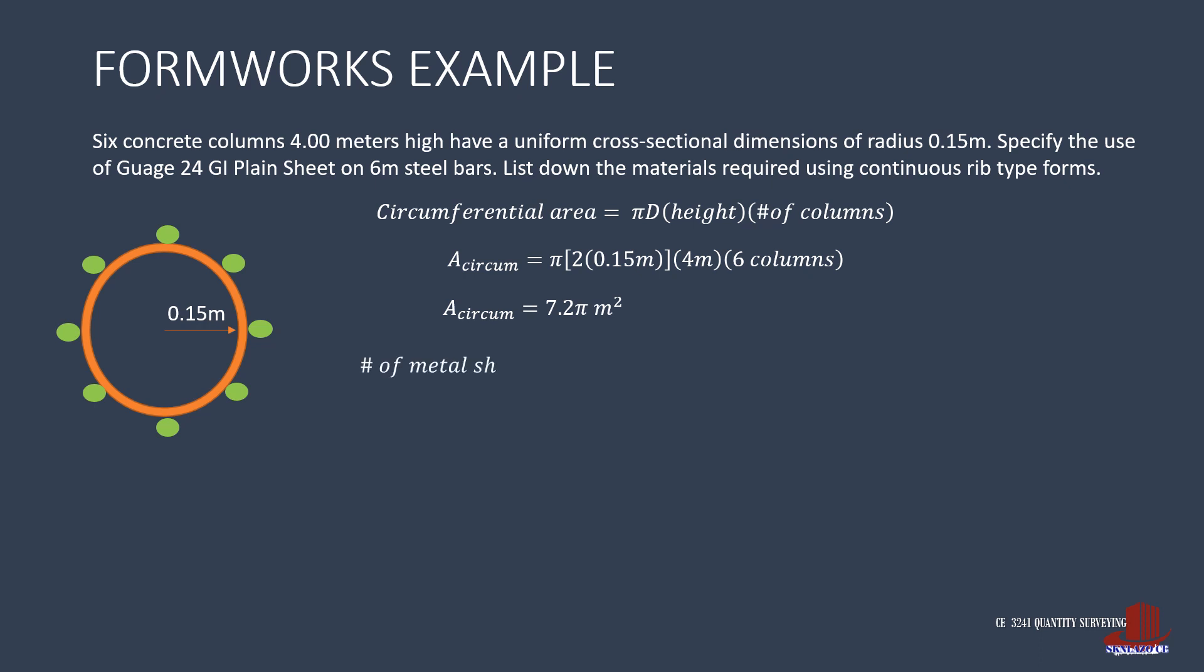So the number of metal sheets is the area of 7.2π divided by area of 1 metal sheet, and that is 1.2 by 2.4. So we get 7.5 rounded up to 8 pieces of GI metal sheets for the forms. In case we use the table, the circumferential area is multiplied by the table multiplier of 0.347, still yielding 7.85 pieces, giving 8 pieces just the same.